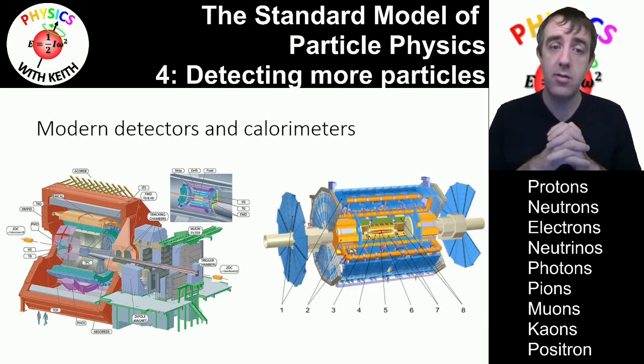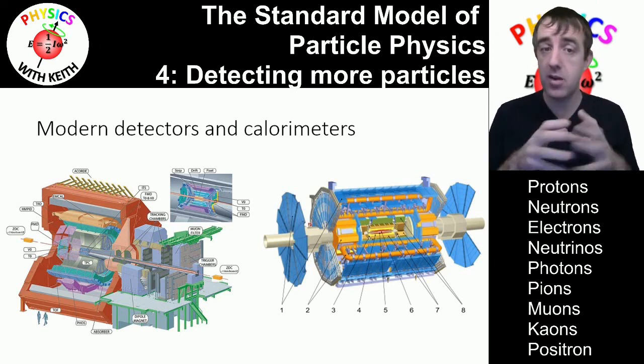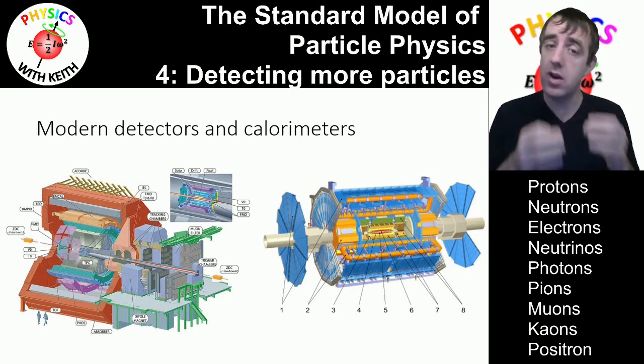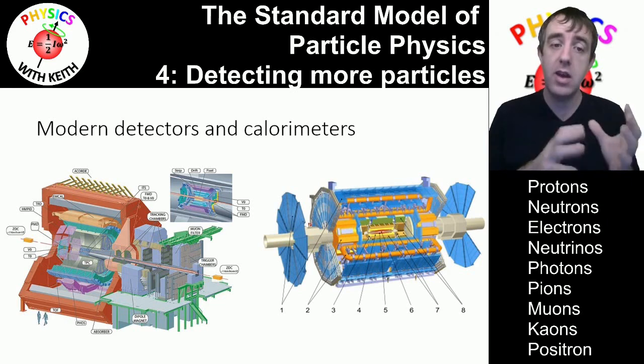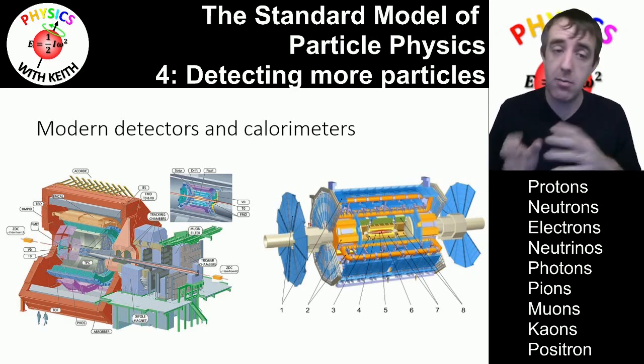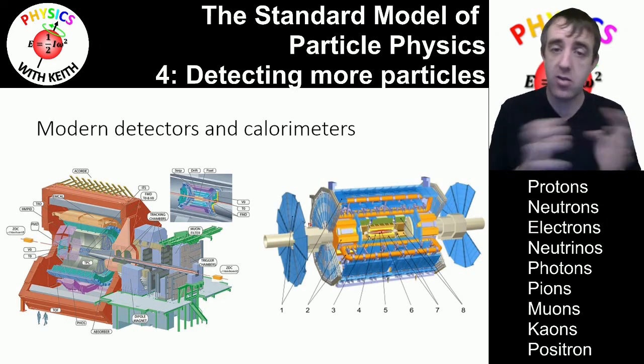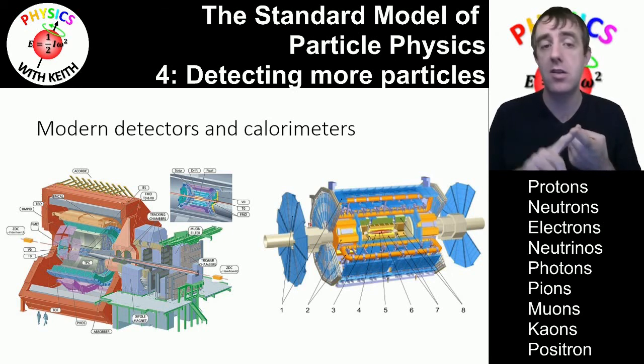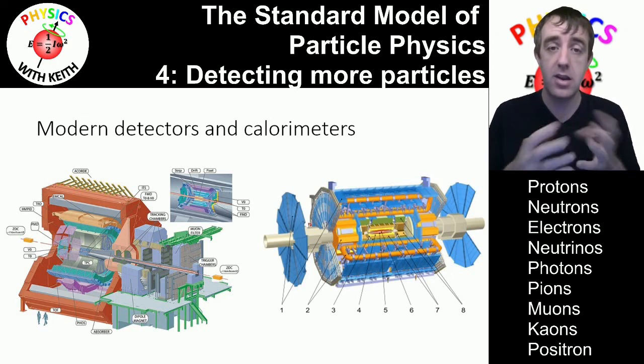They have at least four different experiments all on the same ring. They all operate independently of each other and sometimes they're trying to discover the same thing but they're working separately so that if each of them makes a discovery they can compare them. They can check each other's results with a different set of apparatus using different techniques to see if those results are reproducible.